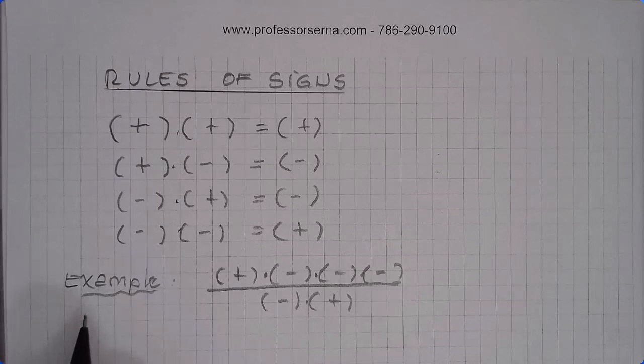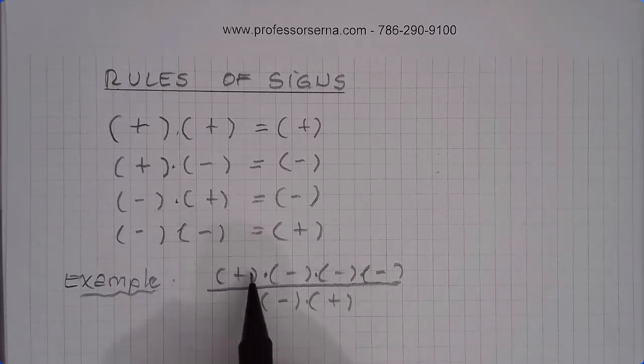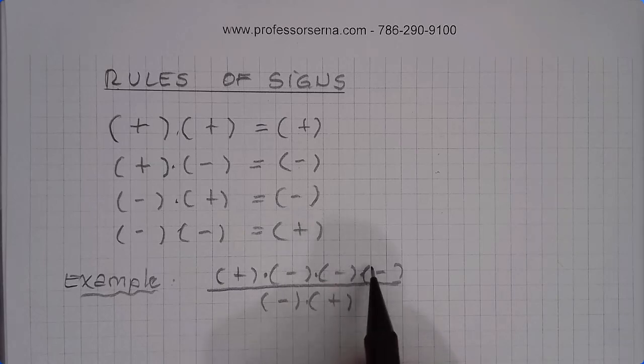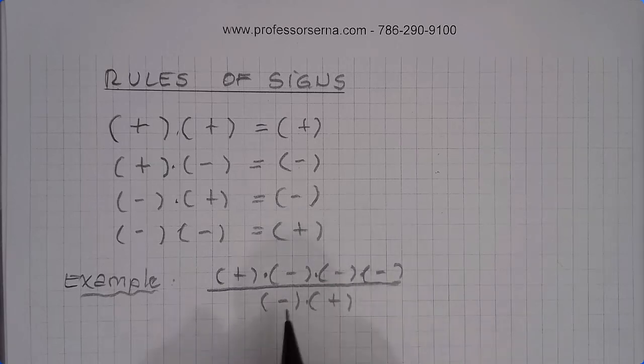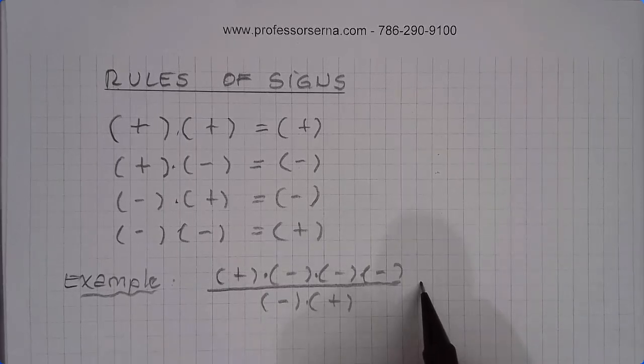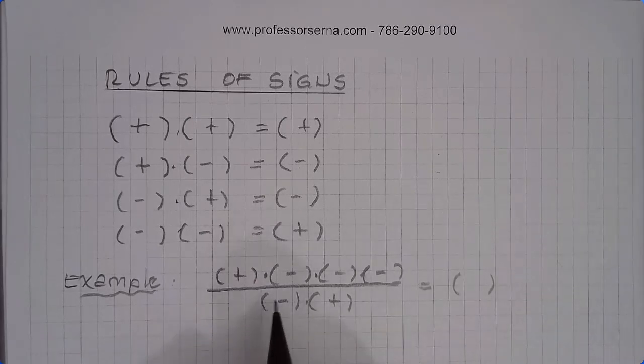Let me give you an example. Let's say that we have to do a calculation like this. We have something positive in here times an expression, a negative expression times another negative expression, another negative expression divided by another negative expression and another one positive. If I want to find out the sign of the result, the only thing I have to do is count the number of negatives.